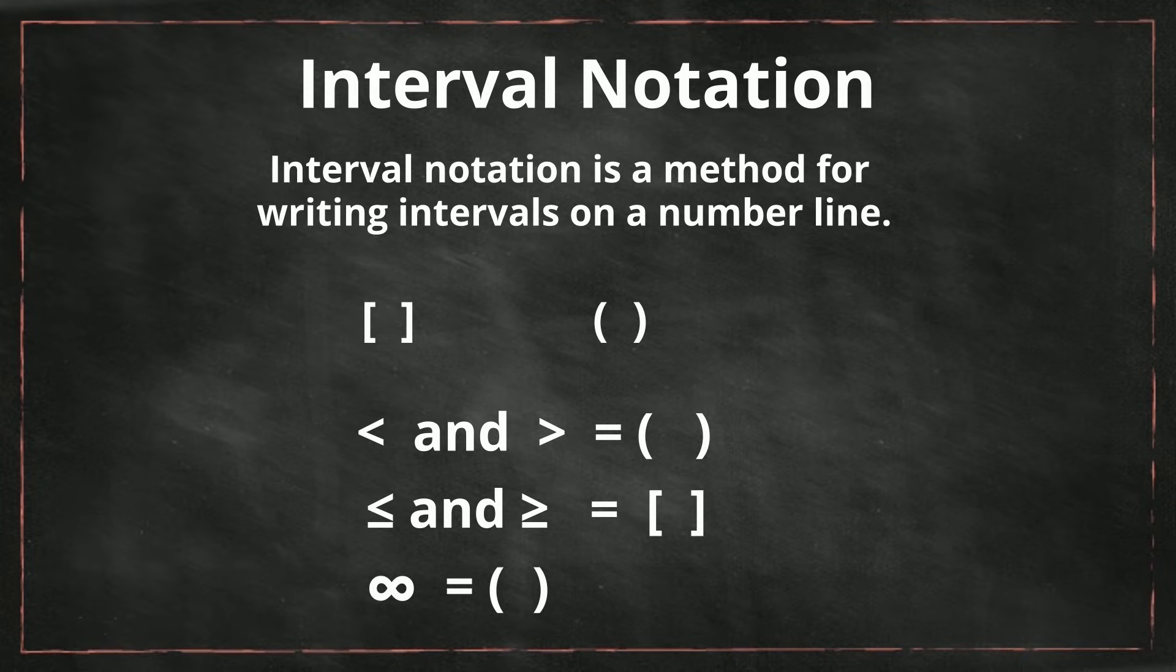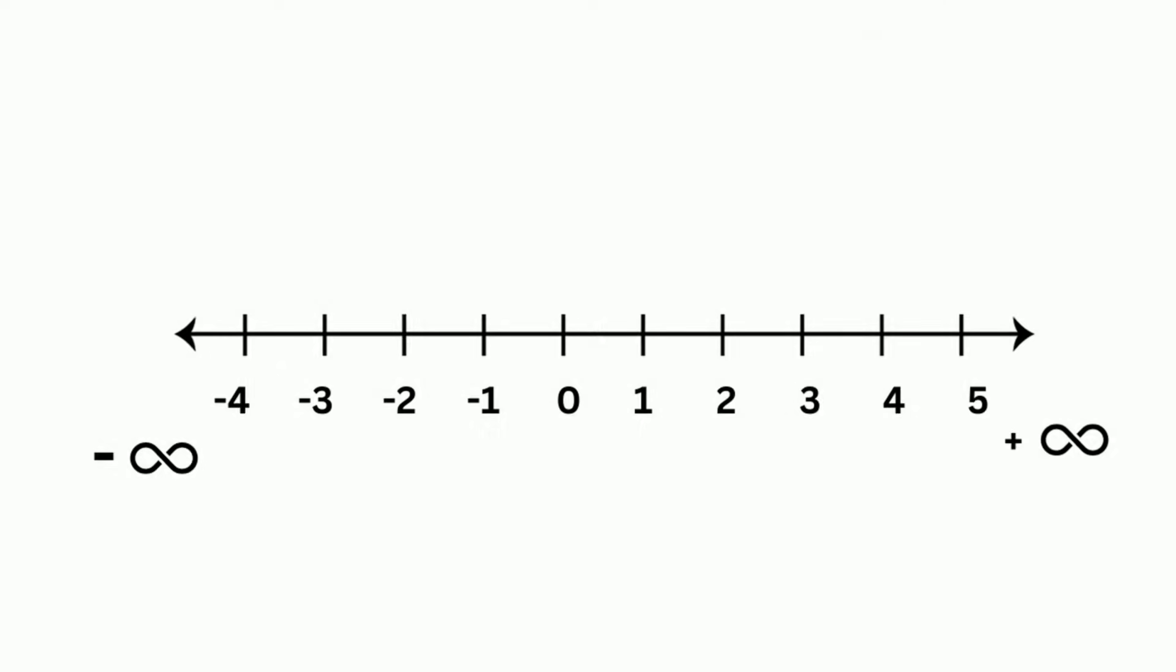Okay, let's look at an example or two. We have x is greater than 3. On the number line, notice we have negative infinity to the left, positive infinity to the right. Here's the 3.